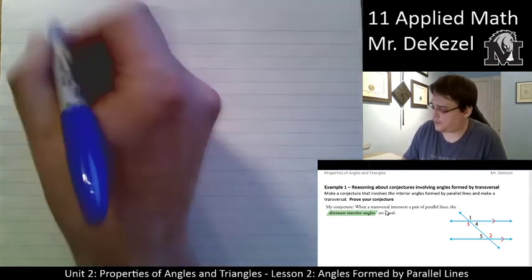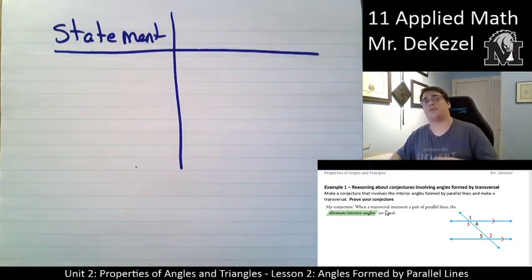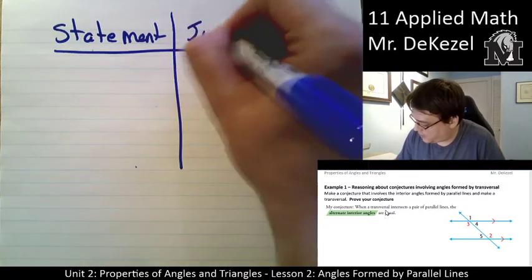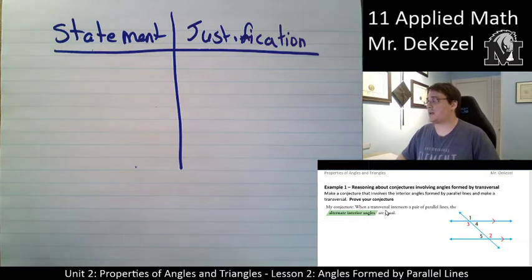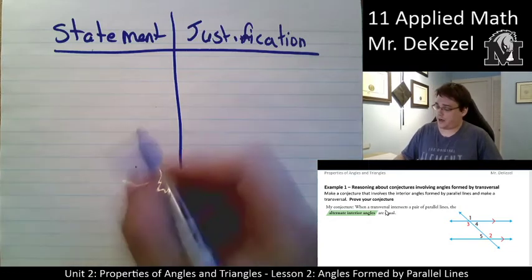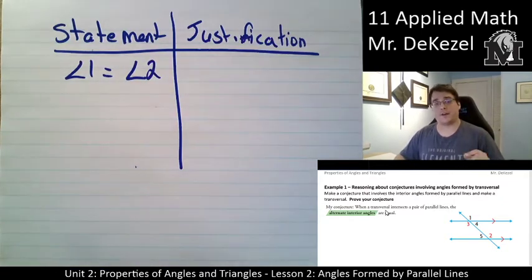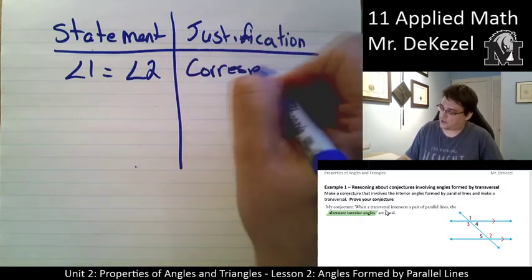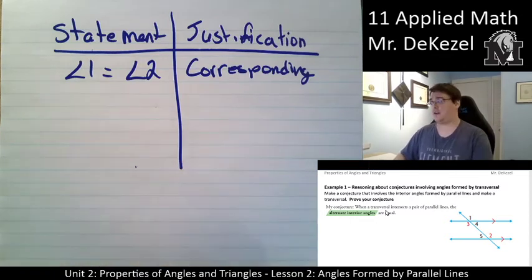I'm going to make a little table with a statement on one side and justification on the other — the reason why I believe I can make that statement. The first statement to prove that angle 3 and angle 2 are equal is that angle 1 is equal to angle 2. The reason is that they are corresponding angles. It's not necessarily important that you have all the exact right words, but giving a reason generally is important — explaining why it is like that.